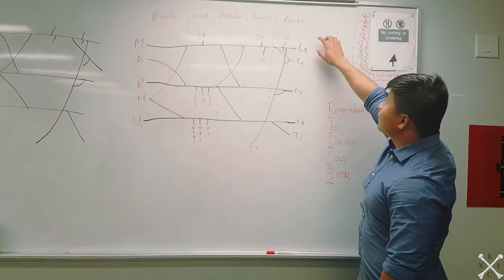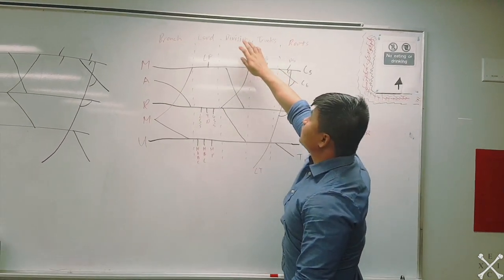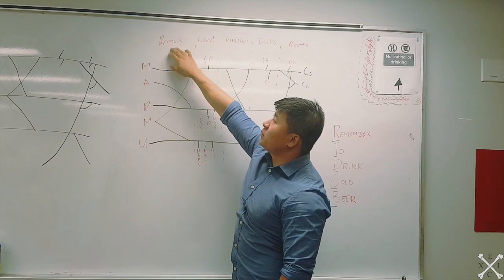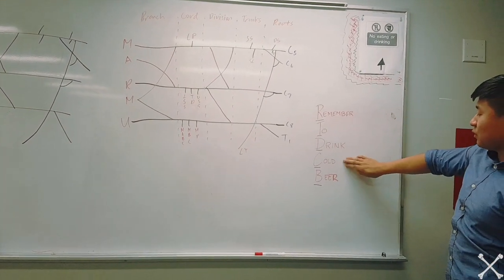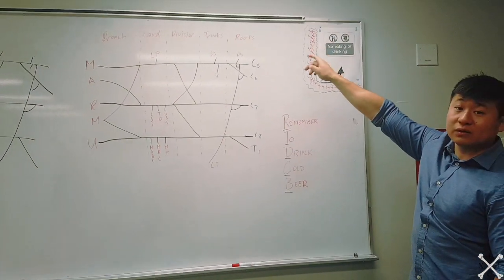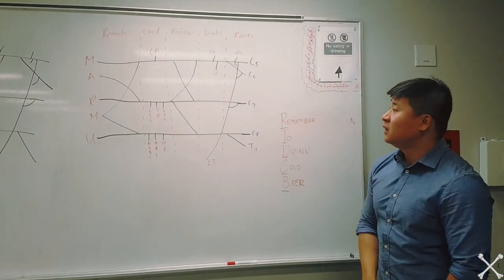On the brachial plexus you have your roots, trunks, divisions, cords, and branches. The acronym to remember this is 'Remember To Drink Cold Beer'—that's roots, trunks, divisions, cords, and branches.